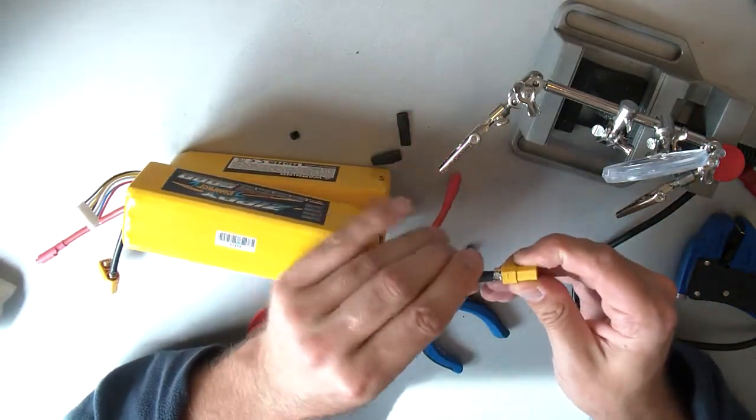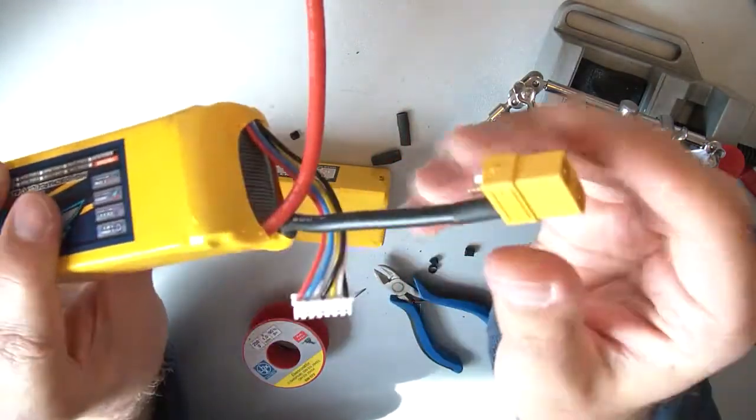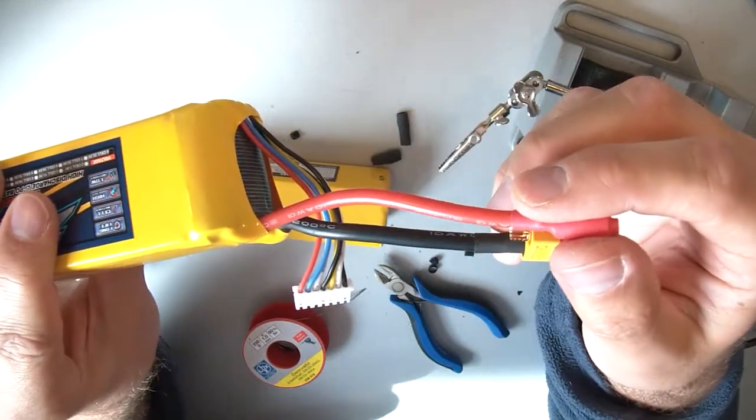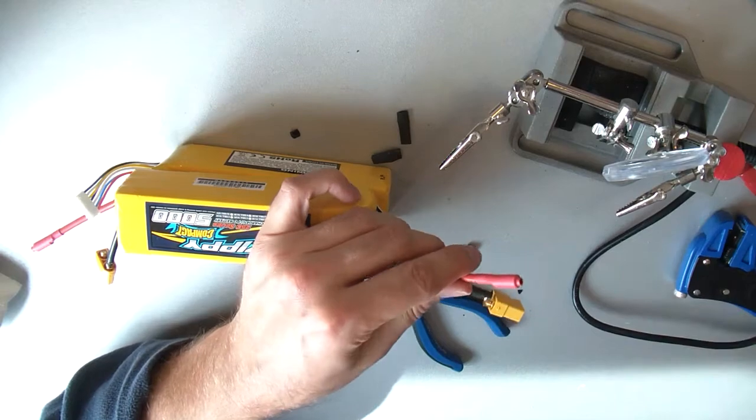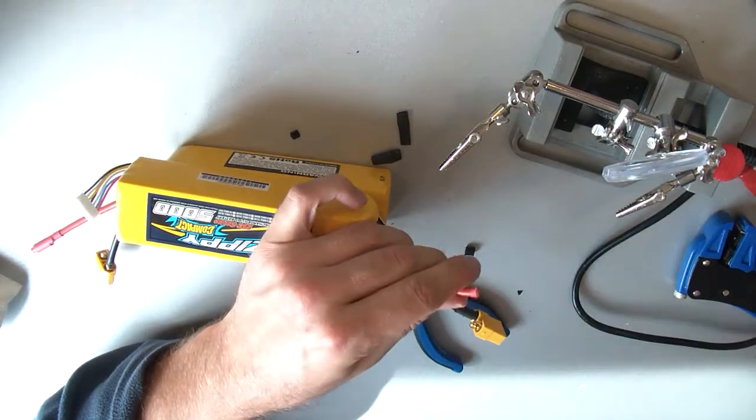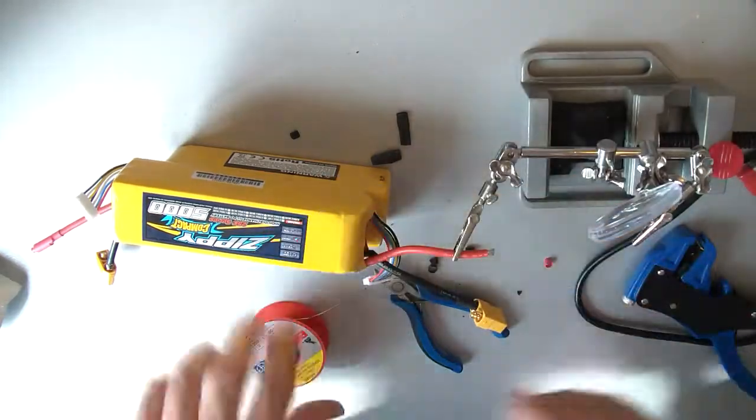So before you do the second wire, make sure to put the heat shrink on the connector. Here you see it. Because in this way you are sure that when you unplug now the red cable, you will not put them together. As I told, very dangerous and you can burn your house down. So be sure to do that. So here we do it again.